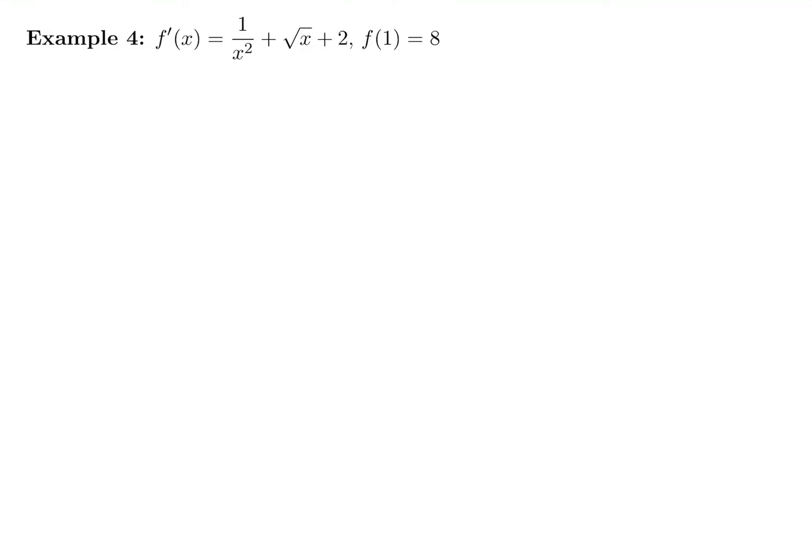Here we are going to solve the initial value problem. We have f prime given, and we know that f of 1 is supposed to equal 8. So we need to find the original function that meets these two things.